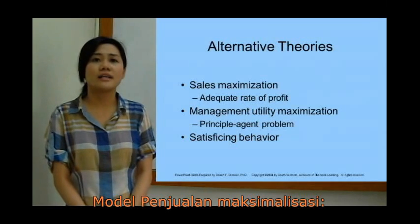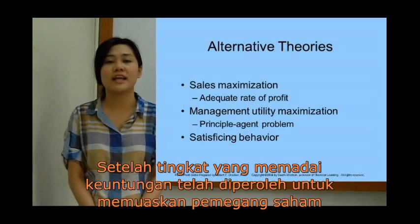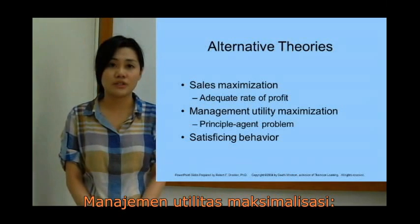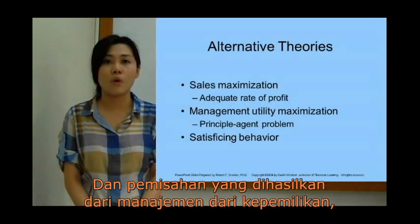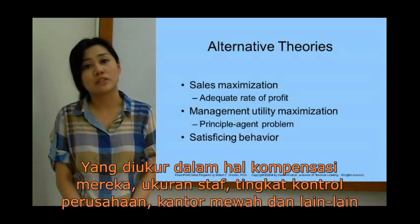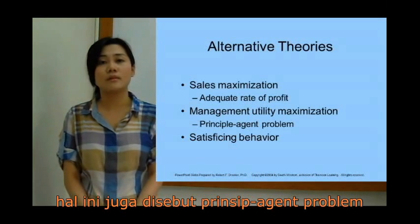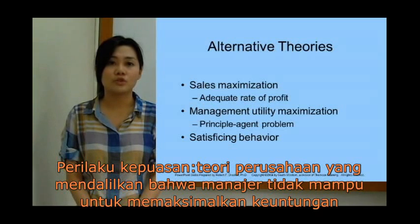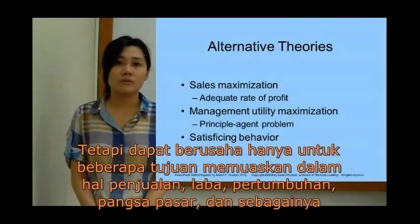Alternative theories: The Sales Maximization Model postulates that oligopolistic firms seek to maximize sales after an adequate rate of profit has been earned to satisfy stockholders. Management Utility Maximization postulates that with the advent of the modern corporation and the resulting separation of management from ownership, managers are more interested in maximizing their utility in terms of compensation, staff size, control of corporations, and offices — also referred to as the principal-agent problem. Finally, Satisficing Behavior postulates that managers are not able to maximize profits but can strive only for some satisfactory goals in terms of sales, profit growth, market share, and so on.